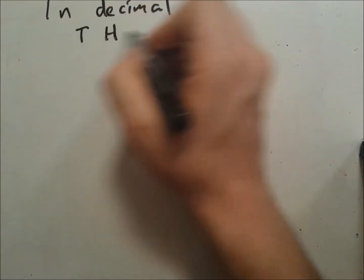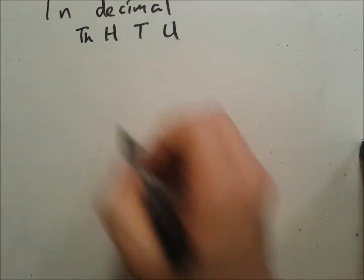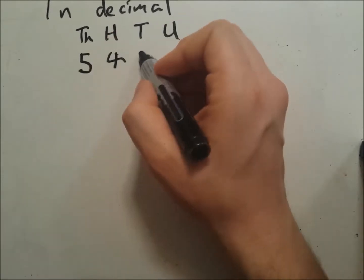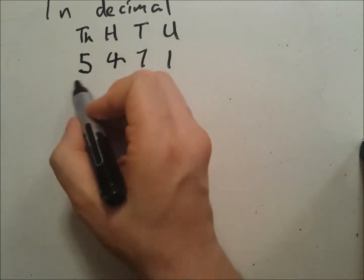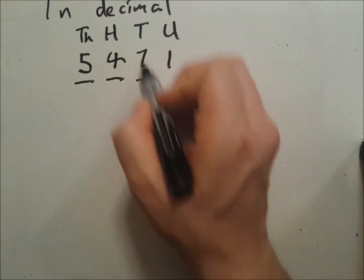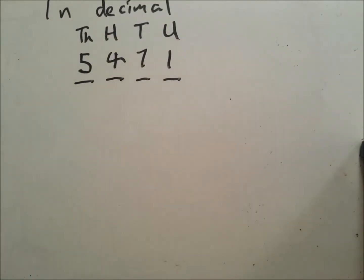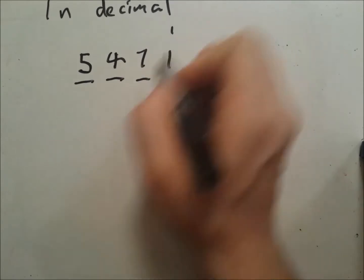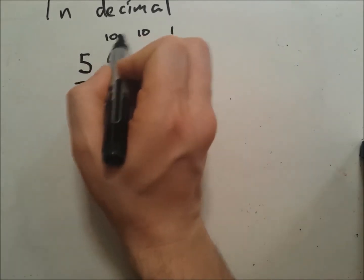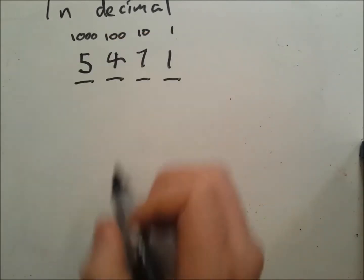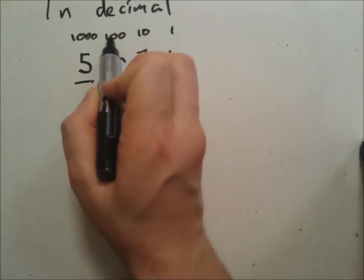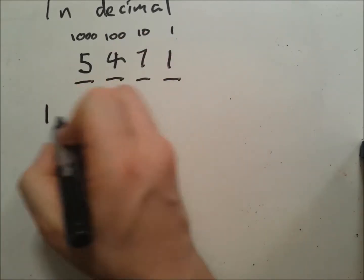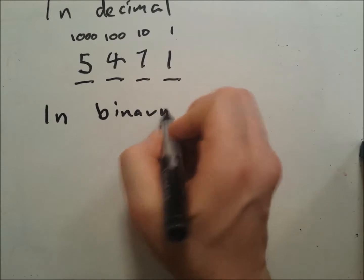In decimal we have these column headings: thousands, hundreds, tens, and units. For example, that's 5,471. You'll see each column value is 10 times as large as the last.